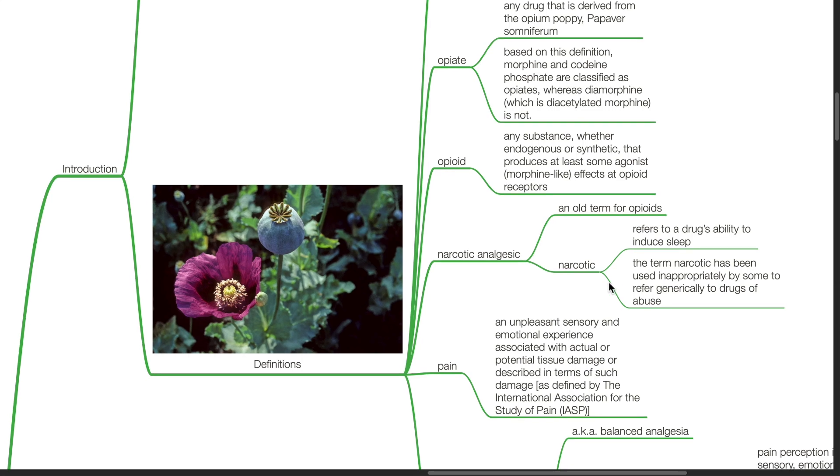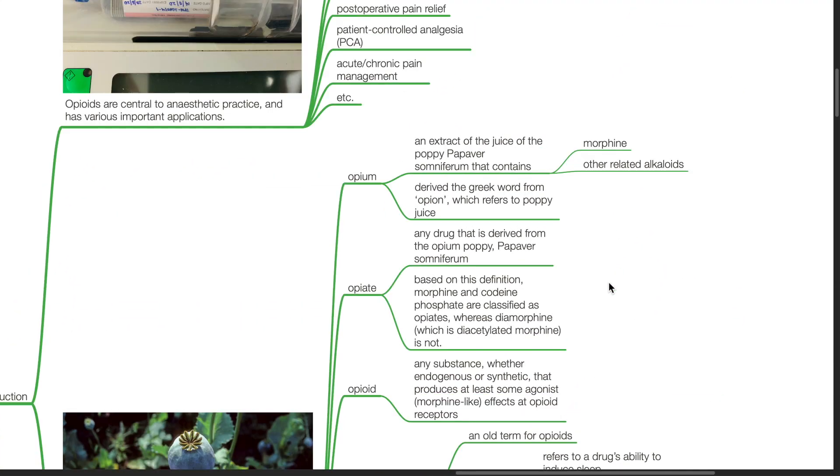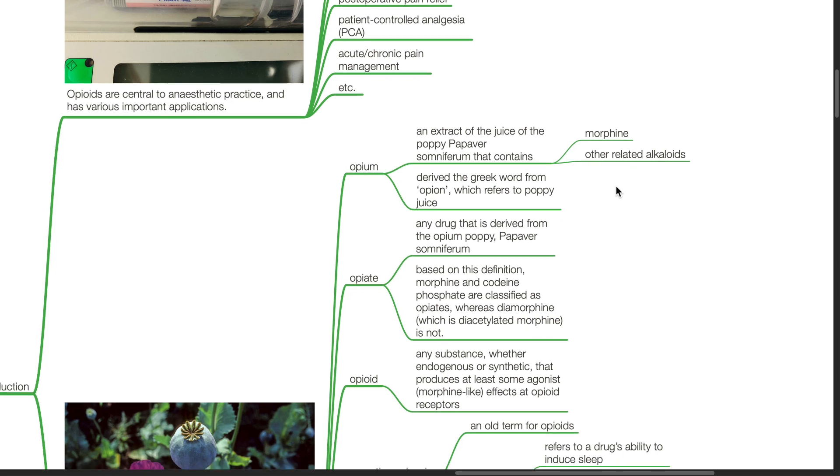Important definitions. Opium is an extract of the juice of the poppy papaver somniferum that contains morphine and other related alkaloids. This term is derived from the Greek word opion which refers to poppy juice.